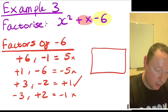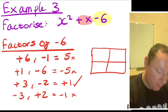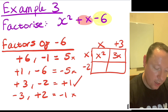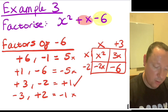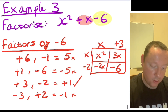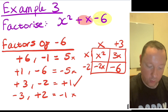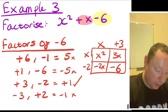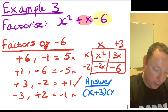Drawing the rectangle: the answer is x plus 3, x minus 2. Checking: x times x is x squared, x times 3 is 3x, minus 2 times x is minus 2x, minus 2 times 3 is minus 6. We have x squared, minus 6, and 3x minus 2x is plus 1x — correct. The final answer is x plus 3 times x minus 2.